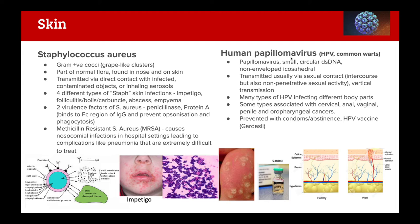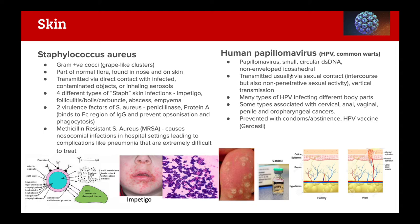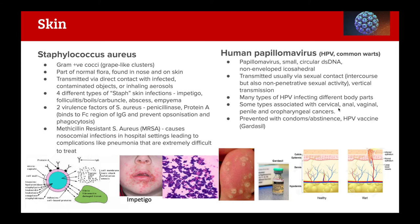HPV - Human Papillomavirus - is an STI that can also cause common warts. It's a papillomavirus with small circular dsDNA, non-enveloped and icosahedral. Transmitted mainly via sexual contact and vertical transmission from mother to baby. There are many HPV types infecting different body parts. Types affecting the genital area are associated with cancers including cervical, vaginal, and others. Prevention includes condoms and the Gardasil vaccine.